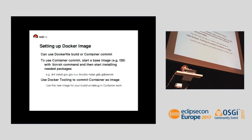If you want to set up your Docker image with the tools you need, there are two ways: you can either use a Dockerfile build or a container commit. The Dockerfile is a special file where you specify a base image and then a set of commands to build your new image from that base. The container commit is a little easier or more freestyle — you take a base image, run a shell command in the Docker tooling, and from the command line start installing packages yourself. For example, you install GCC, C++, binutils, make, and GDB server. The GDB server is needed if you want to do debugging. Once you're happy with your result, you use the Docker tooling to commit the container as an image and then use that new image.